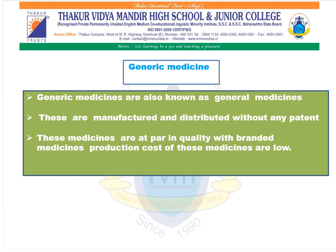Now we are going to study about generic medicines. Generic medicines are also known as general medicines. These are manufactured and distributed without any patent. These medicines are at par in quality with the branded medicines, and the production cost of these medicines is low due to fewer expenses on research, as their formula is readily available.